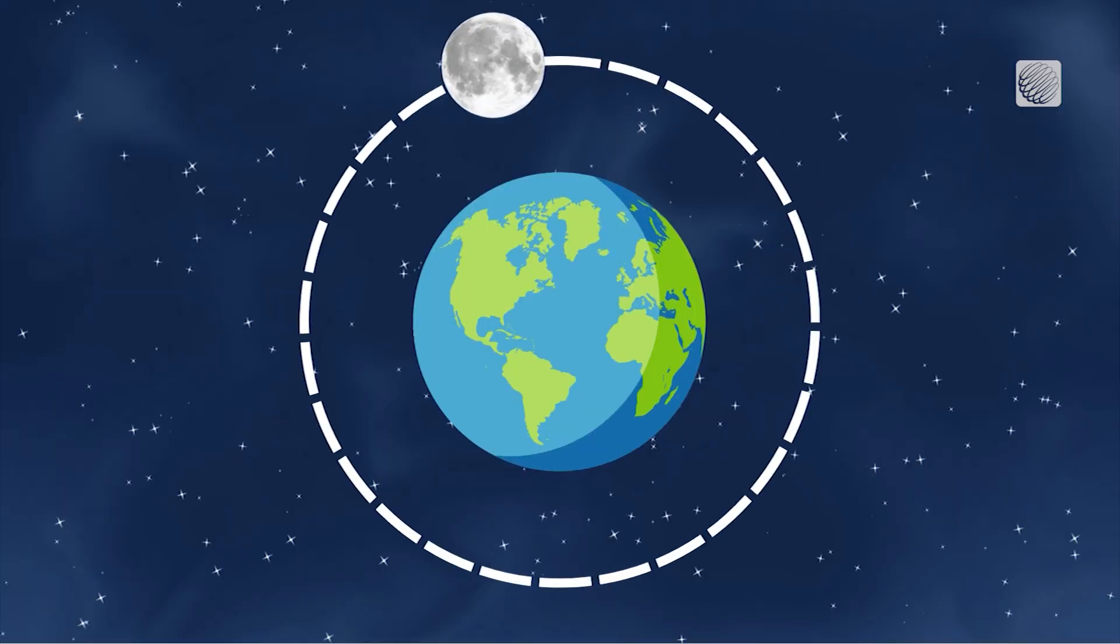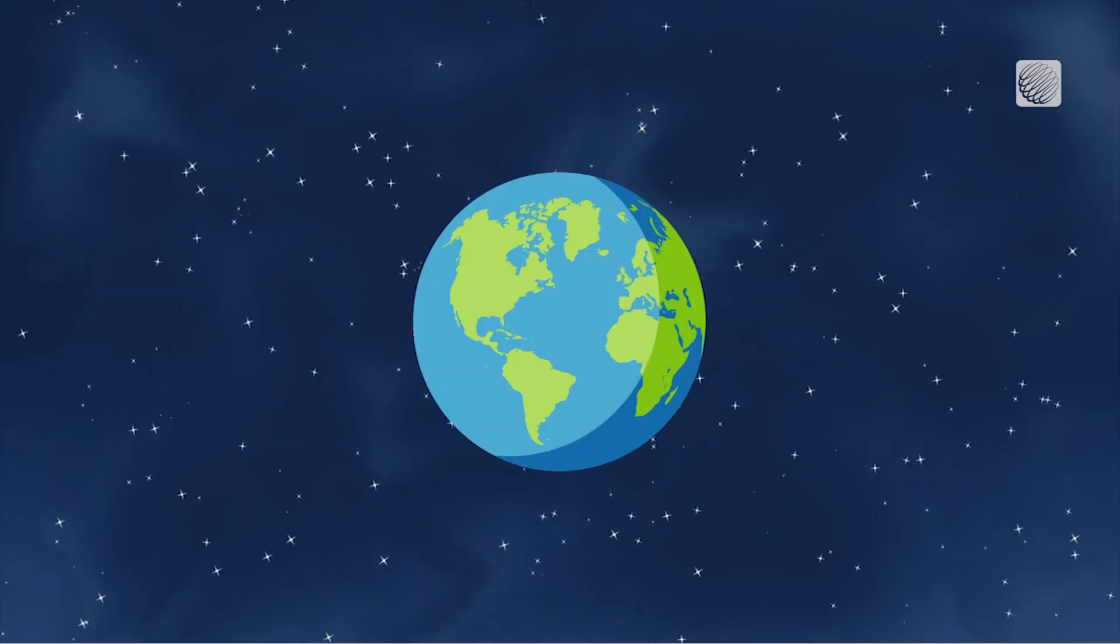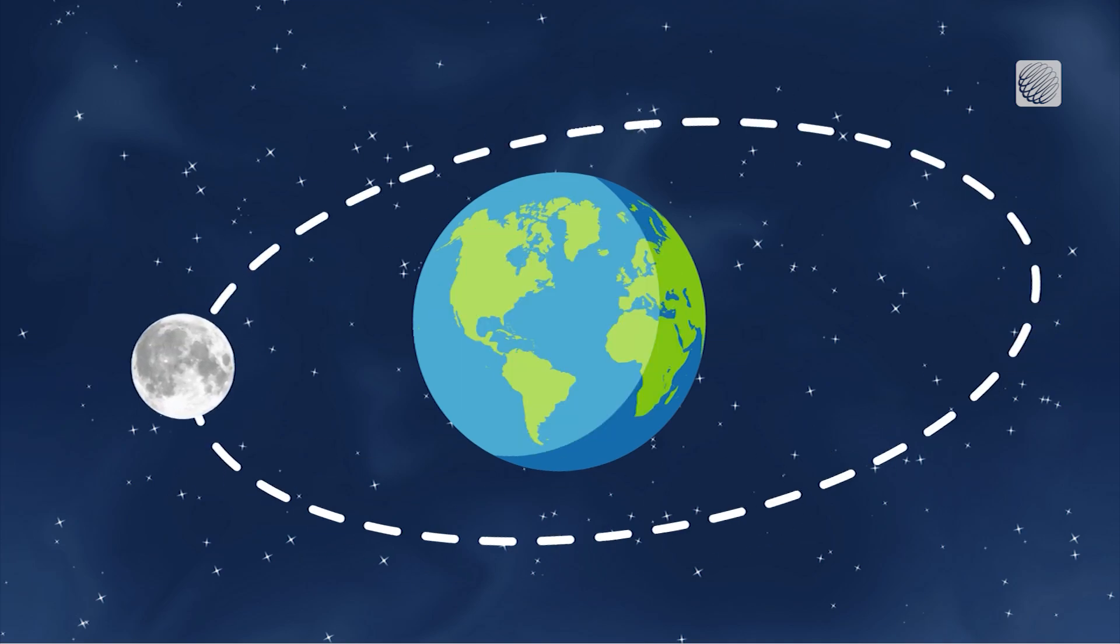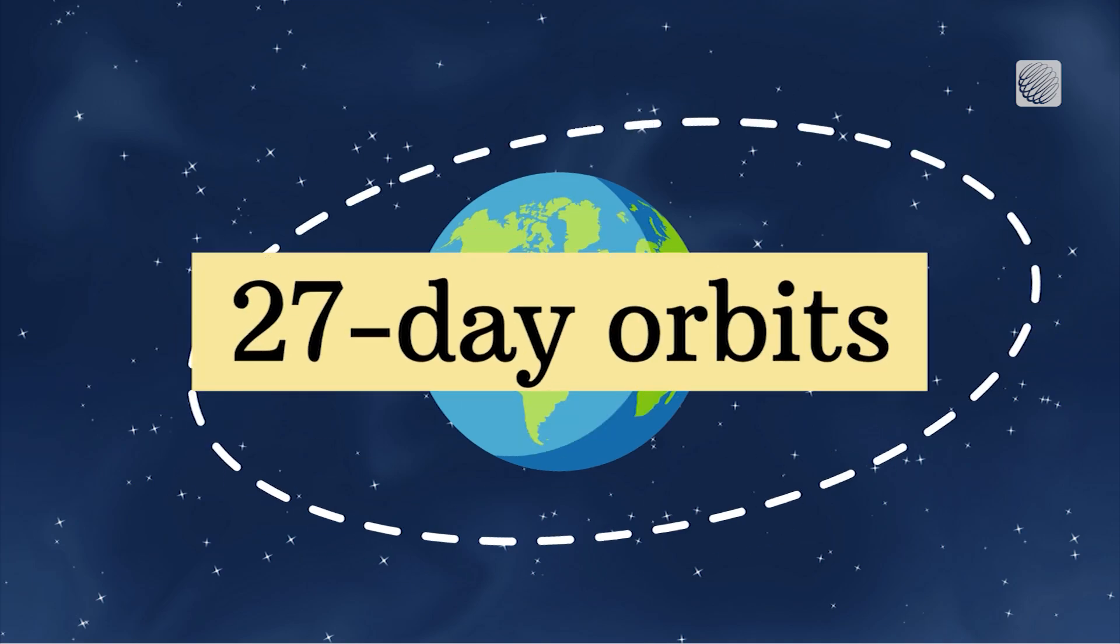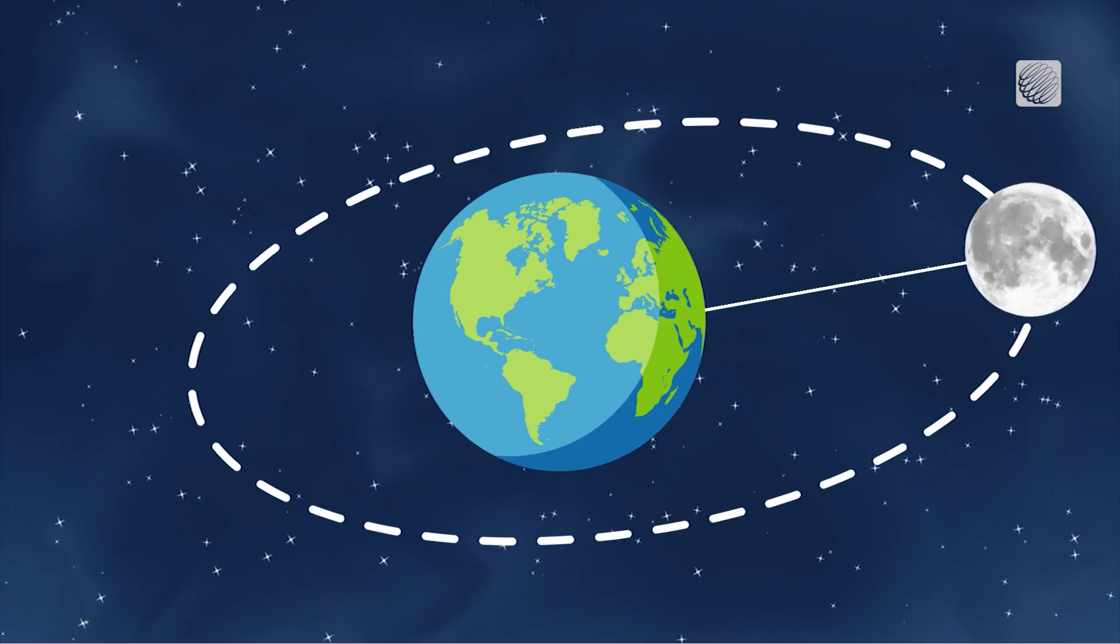The moon does not orbit Earth in a perfect circle. It's more of an ellipse. So during each of its roughly 27-day orbits, the moon will reach both a farthest distance and a closest distance to planet Earth.